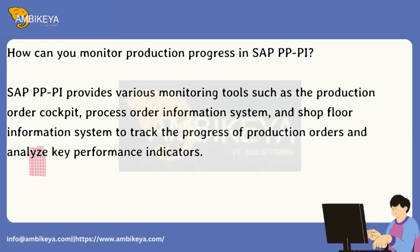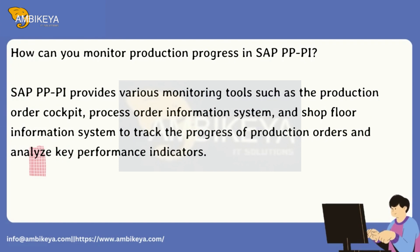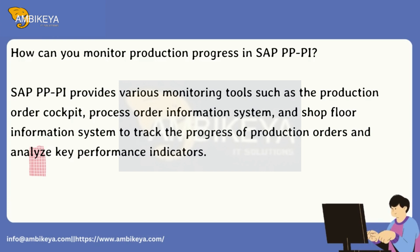How can you monitor production progress in SAP PP-PI? SAP PP-PI provides various monitoring tools such as the production order cockpit, process order information system, and shop floor information system to track the progress of production orders and analyze key performance indicators.